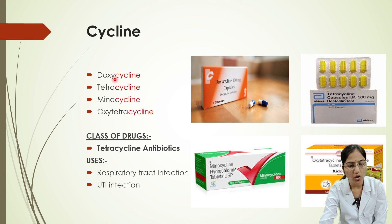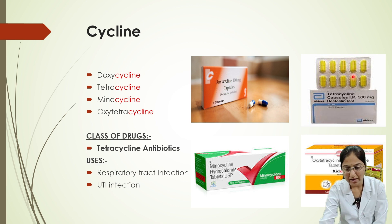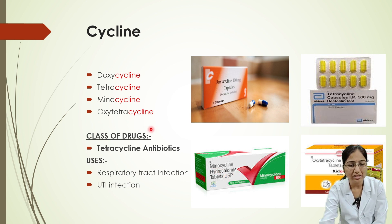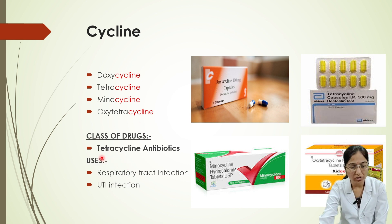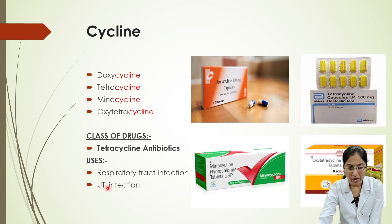Next, we'll look at drugs whose names end with '-cycline'. Examples include doxycycline, tetracycline, minocycline, and oxytetracycline — all ending with '-cycline'. These belong to the class of tetracycline antibiotics, and they are prescribed for respiratory tract infections (RTI) and urinary tract infections (UTI).